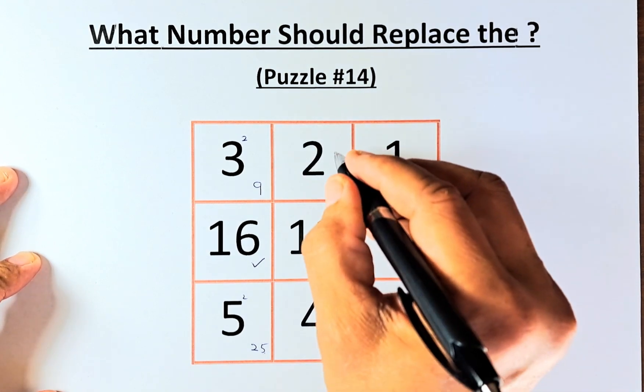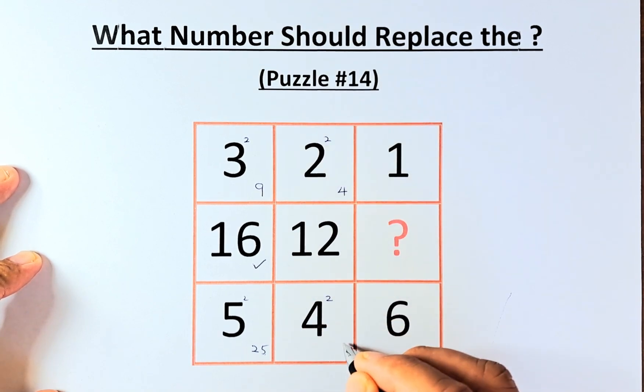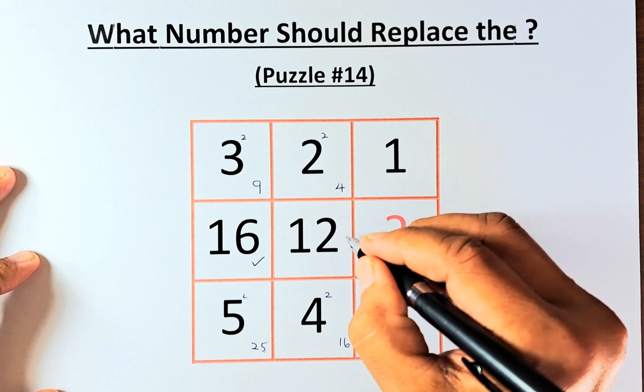for the second column, you need to square 2 and you square 4. 2 squared is 4, 4 squared is 16, and then you take 16 minus 4, and that's how you get 12.